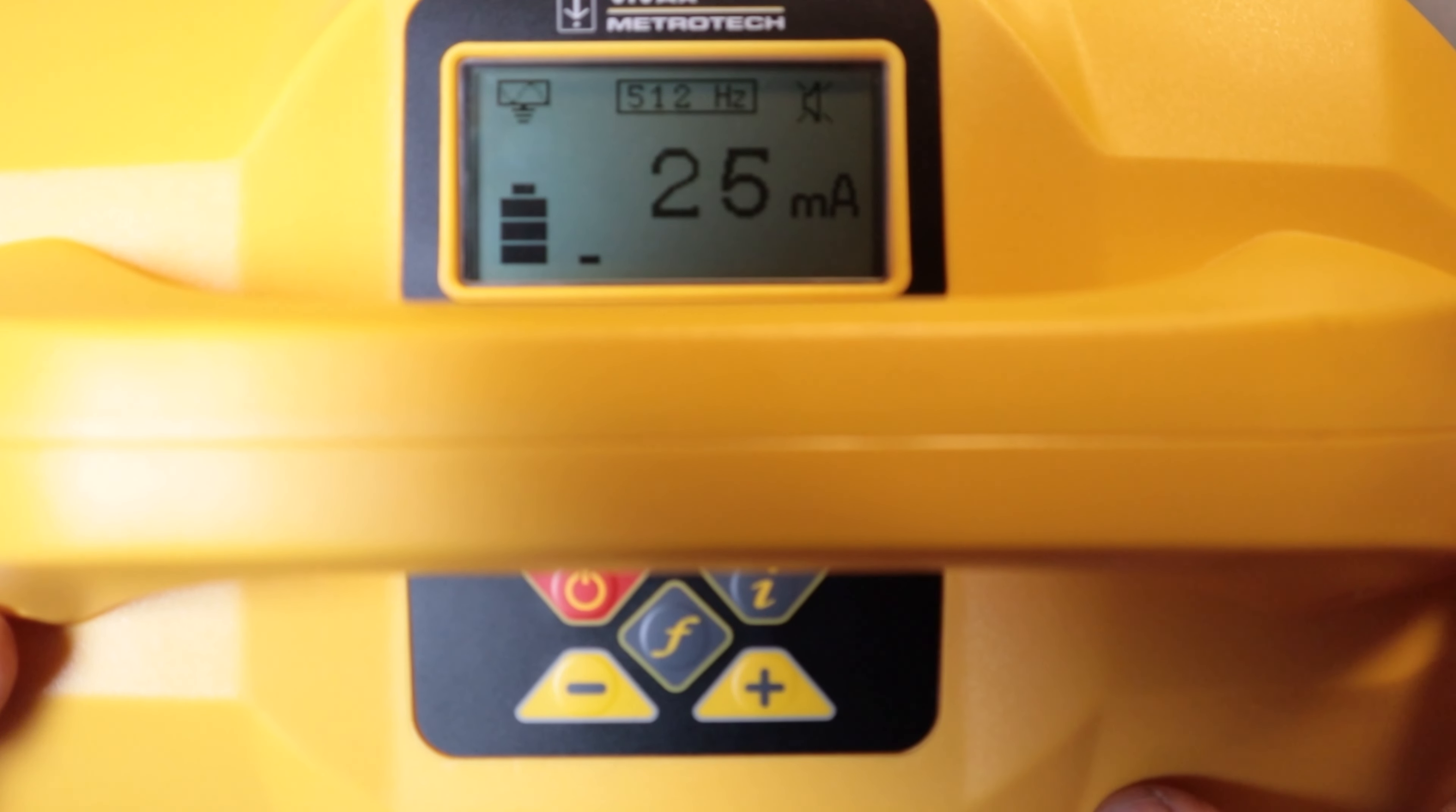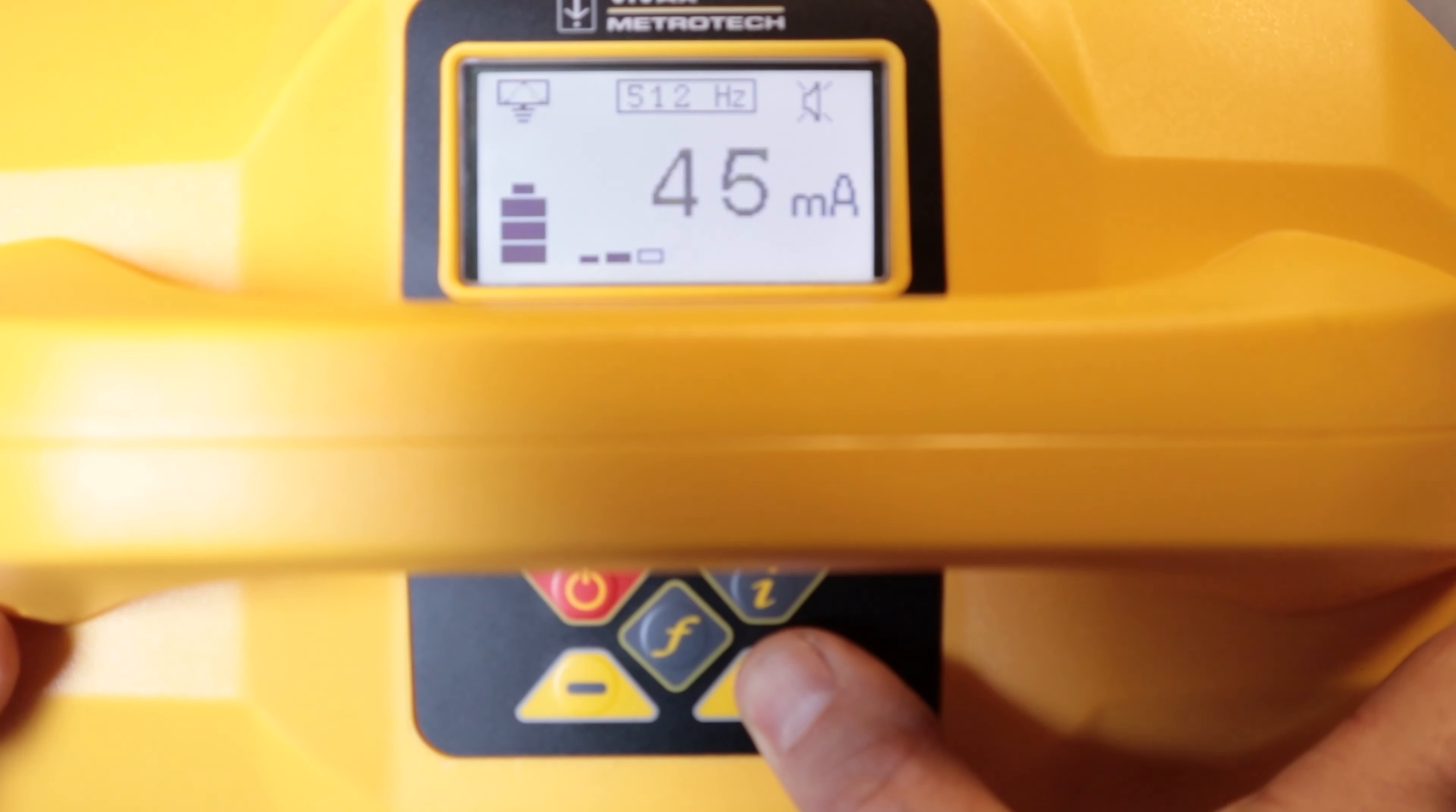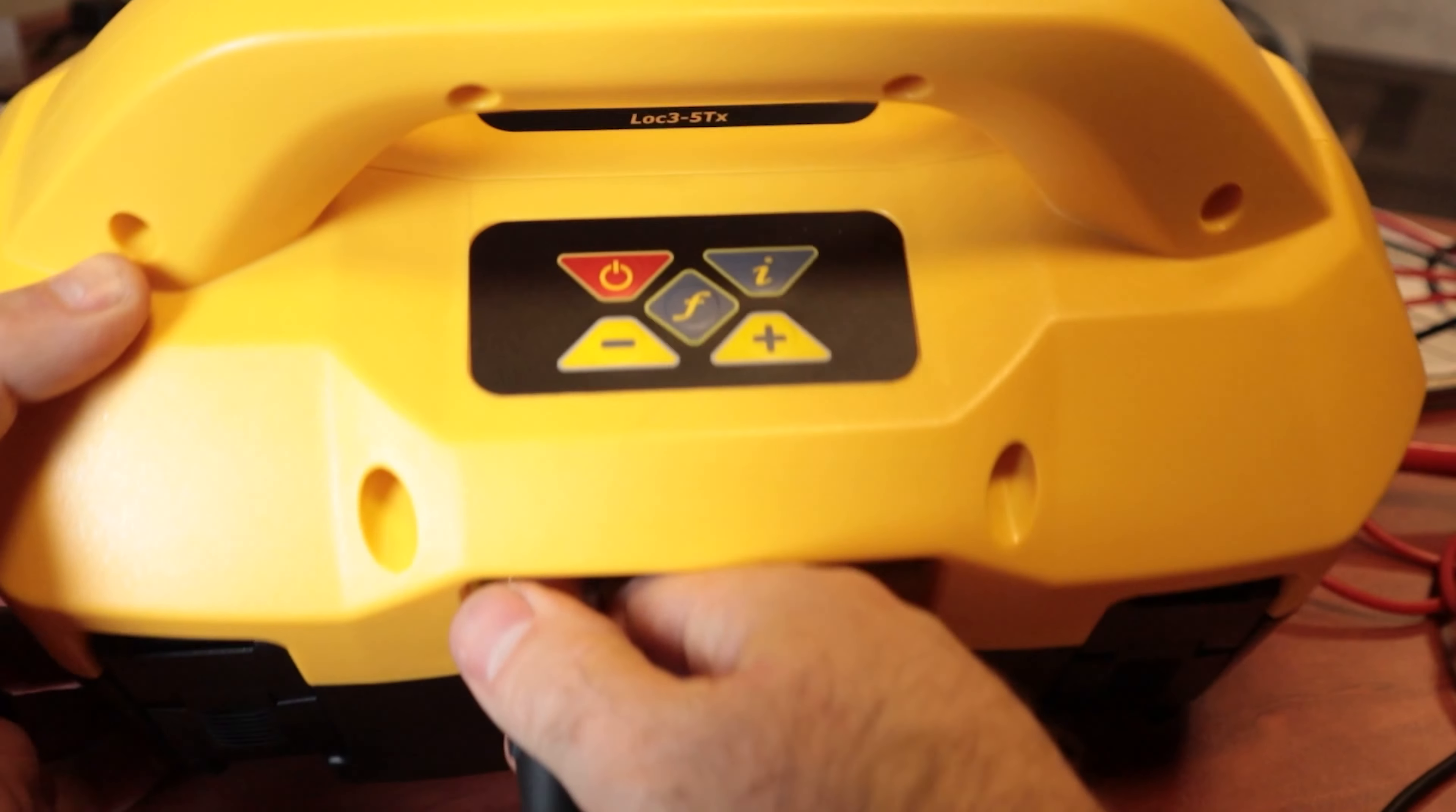Now I have my leads plugged in which is shown by this indicator up here. It has changed me to 512 hertz because that's the last frequency that I was using when I had my leads plugged in and now I'm at 25 milliamps. These transmitters will try and self-regulate to 25 milliamps when they are just connected and on basic power level. I can increase the power output by pushing the plus button up and it will increase how much power I am sending out from this transmitter.